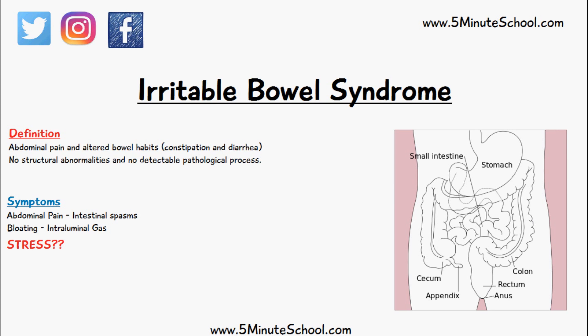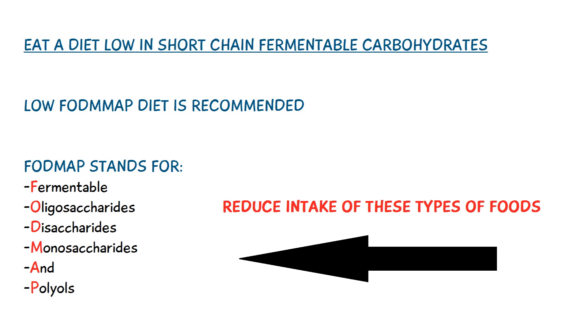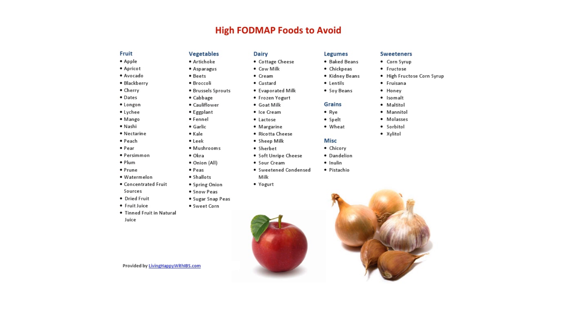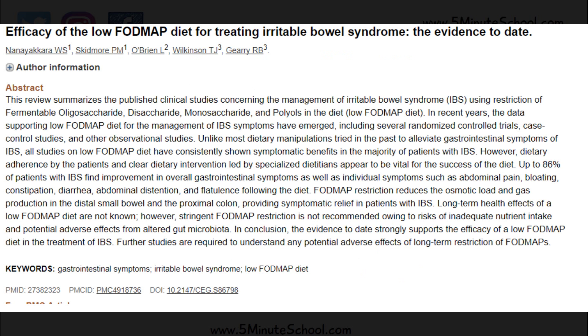Treatment usually involves dietary modifications. Diets which reduce the amount of short chain carbohydrates are recommended, including avoiding foods like apples, cabbage, beans, and certain fruits. Eating a diet low in short chain carbohydrates has been shown to reduce IBS symptoms.